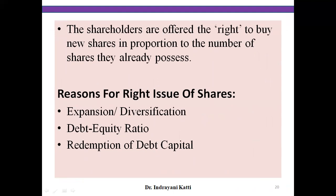The shareholders are offered the right to buy new shares in proportion to the number of shares they already possess. For example, suppose a company gives one rights share for every five equity shares held. If you have five equity shares, you get one share in the rights issue. The company declares the proportion and gives existing shareholders the right to buy shares at a discounted rate within a specified date.